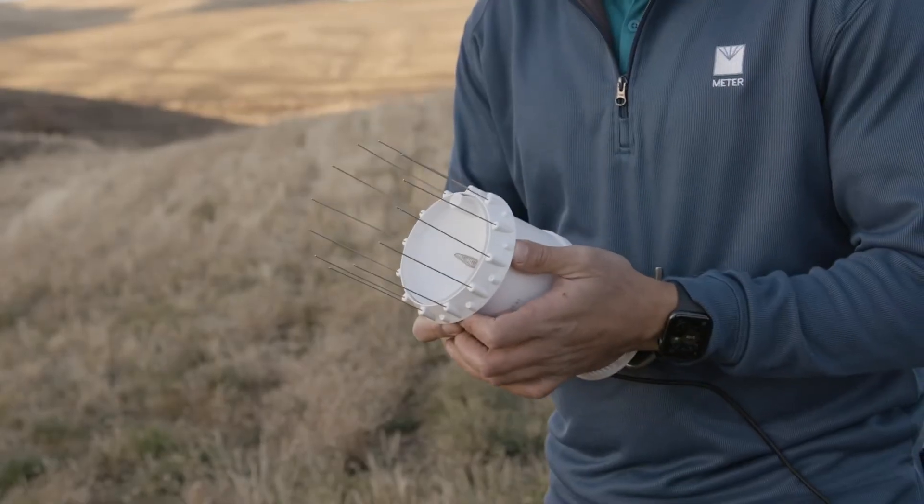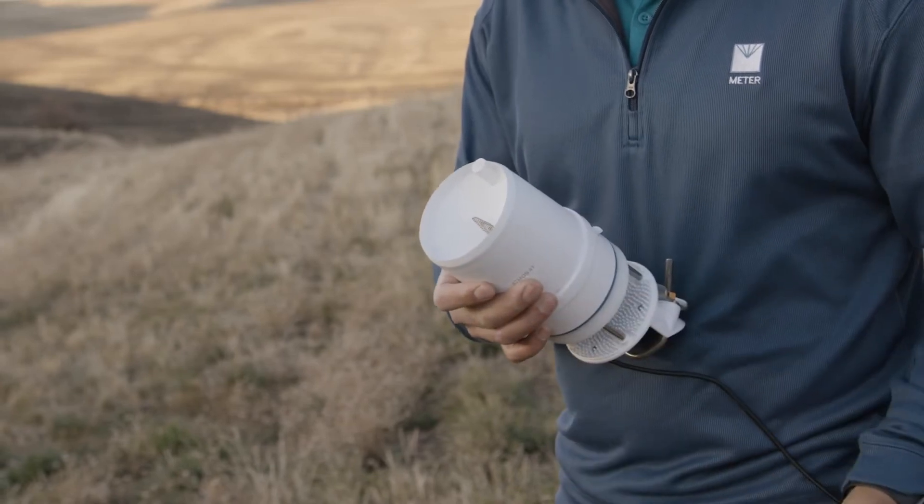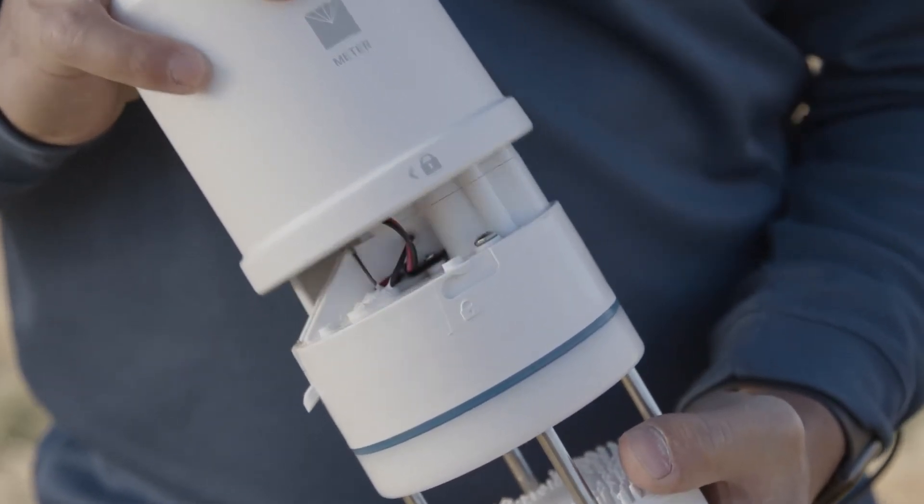Remove the bird deterrent if one is installed. This is removed by pushing up on the underside of the plastic ring. Unlock the funnel by pushing down and turning counter-clockwise.